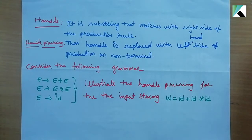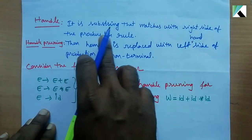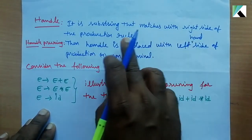This bottom-up parsing process has another alternative name: handle pruning. Before going to handle pruning, what is the handle? It is a substring that matches the right side of the production rule.